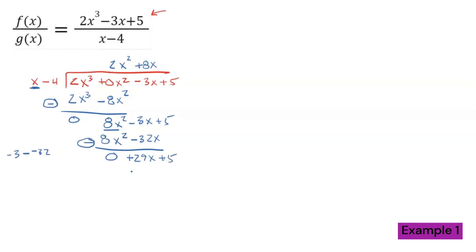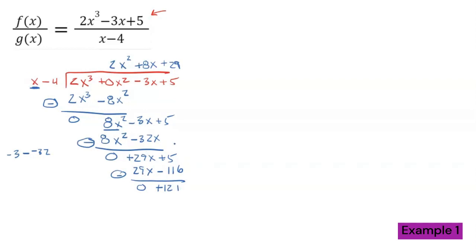To turn x into 29x, I multiply by 29. 29 times x = 29x, and 29 times -4 = -116. Then subtract one final time: 29x - 29x = 0, and 5 - (-116) = positive 121. I cannot turn x into 121, so I'm done. That 121 is my remainder, and 2x² + 8x + 29 is my quotient.